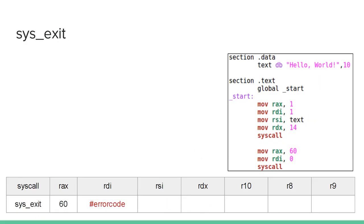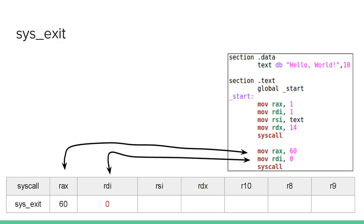There's also sysexit, which is what you use to exit your code — it tells the system that you're done running your code. Sysexit has an ID of 60, and it has an error code value as the first argument. The error code can be anything you want, but if it's zero that means there was no error. If it's anything else, that is your error code. Depending on how you make the software, you can decide what error code means what. If you just want to exit with no error, you load zero into the first argument. So we moved 60 into RAX — that's the ID for the sysexit syscall — and moved zero into RDI because there is no error code.